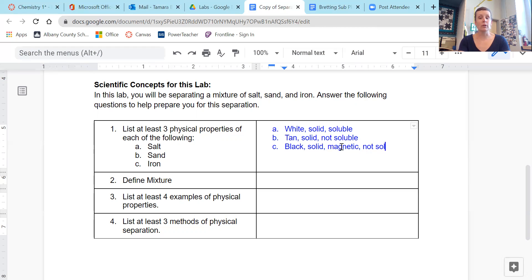If we wanted to say not soluble here too, that can help. Up here, we could put not magnetic. Sand is not magnetic. Iron is magnetic. So then we could go up here and put not magnetic again for salt.